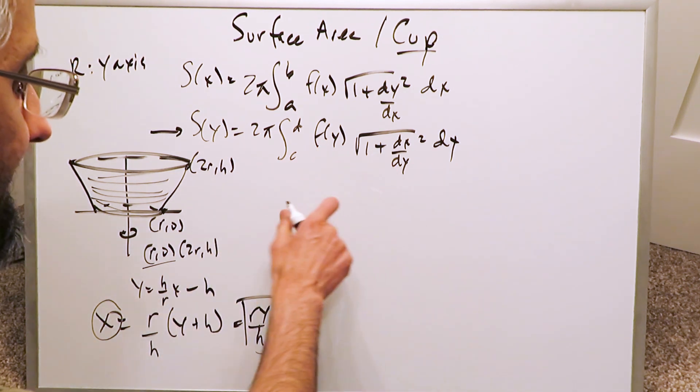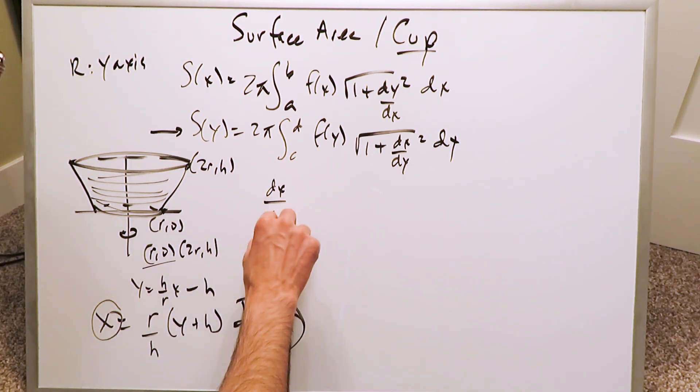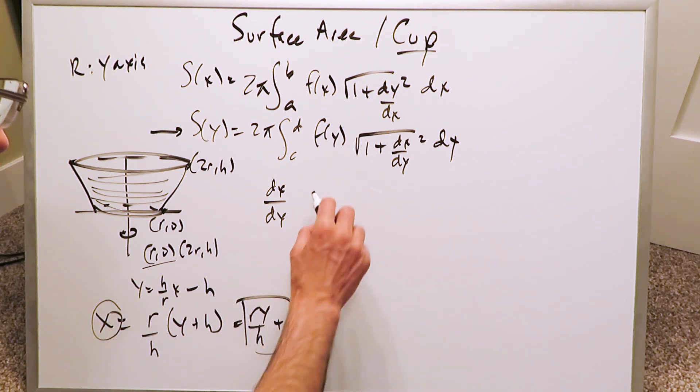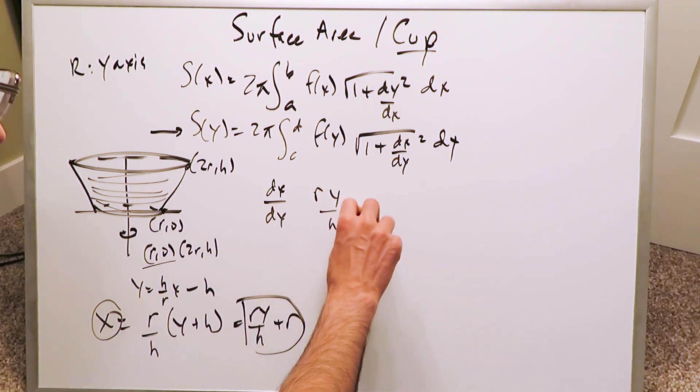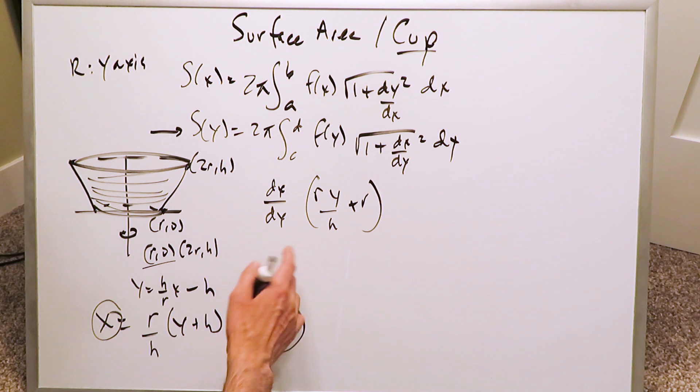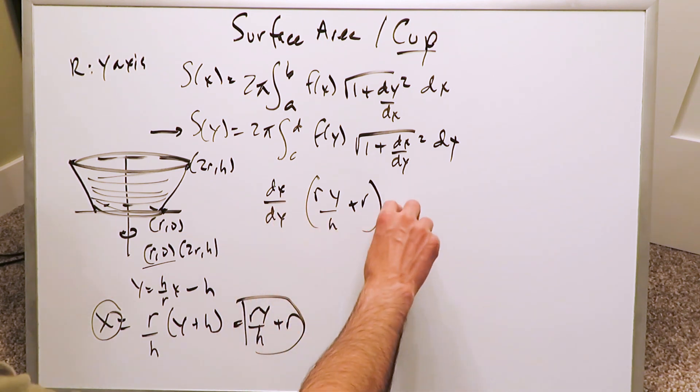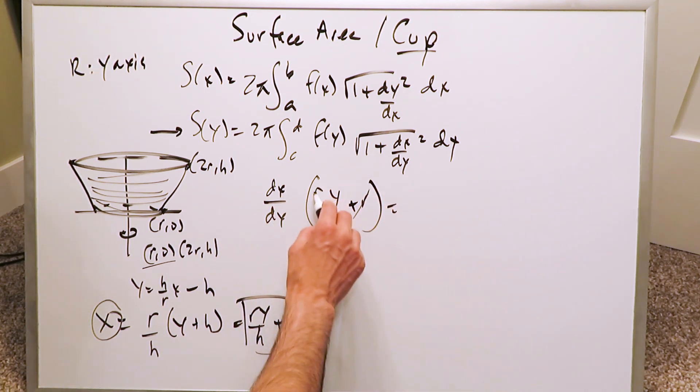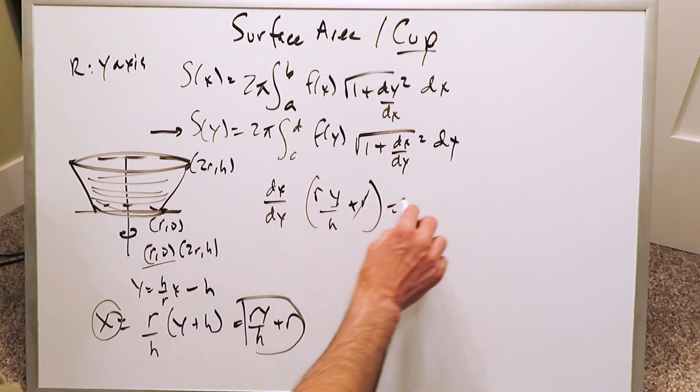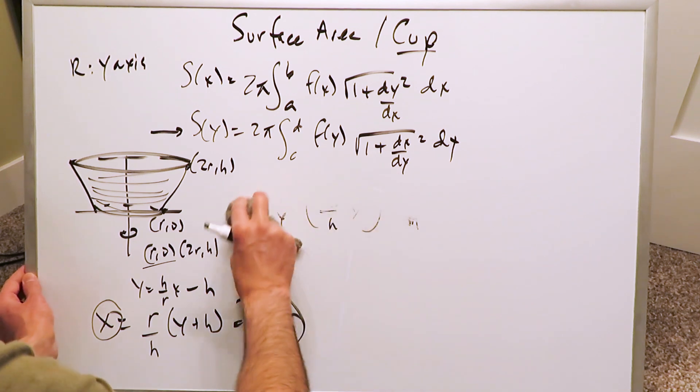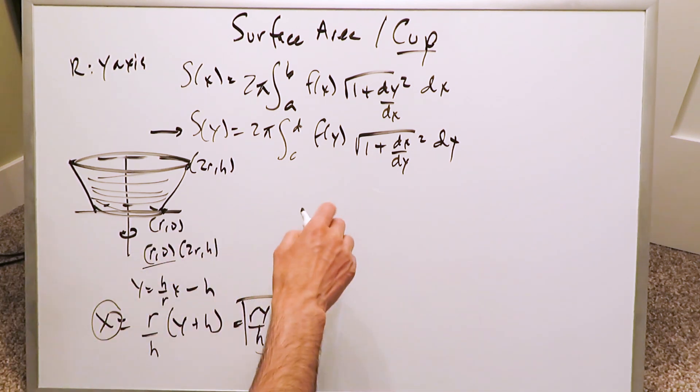Now we have to determine dx/dy. You're looking at ry/h plus r. When you do it, this is a constant, it'll go away. The derivative of this y variable is r/h. So dx/dy equals r/h. I'm generalizing here only in terms of terminology, but I know now my dx/dy equals r/h.